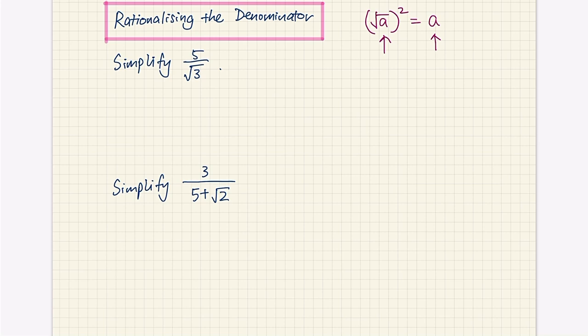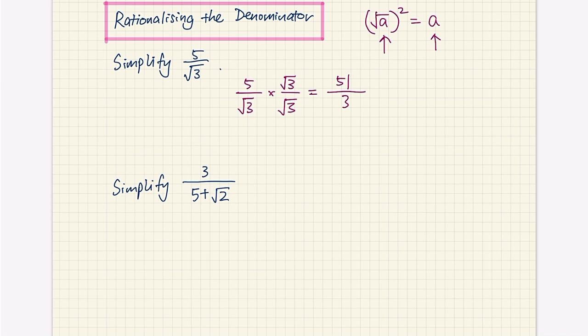Let's look at the first example: simplify 5 over root 3. We're going to apply that property and multiply the denominator by root 3. Whatever we do to the denominator, we have to do to the numerator. So the denominator becomes root 3 times root 3, which is root 3 squared, giving us 3, and the numerator becomes 5 root 3.